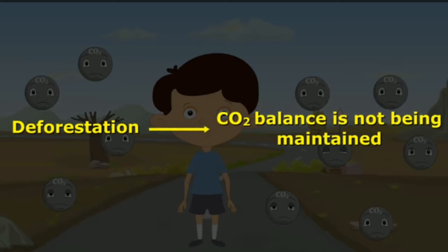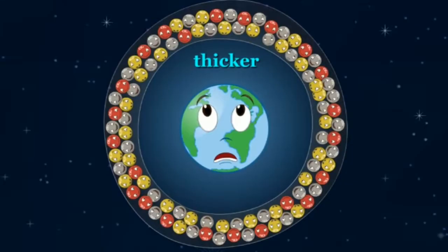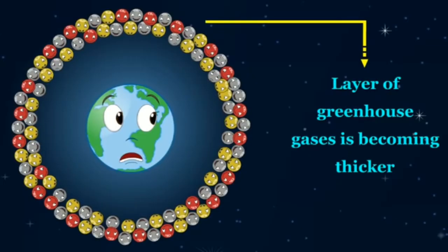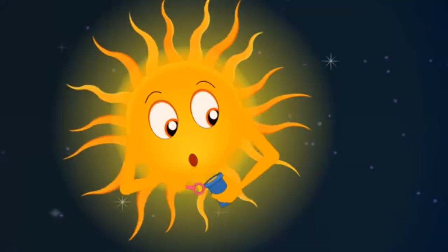Because of deforestation, the level of carbon dioxide in the atmosphere is increasing greatly. When the carbon dioxide level rises too much, a very thick layer of carbon dioxide, methane, and nitrous oxide forms around the earth. When this layer keeps increasing, much more heat will be trapped than should be.